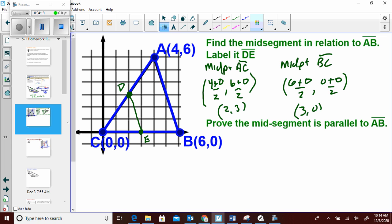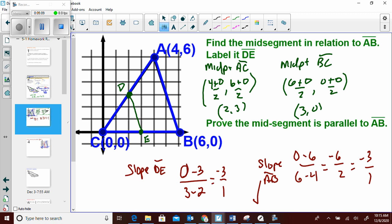How can I prove they're parallel? Well, exactly. We need the slopes. So let's find the slope of DE. Change in y over the change in x. 0 minus 3 over 3 minus 2. Negative 3 over 1. Now let's check the slope of AB. 0 minus 6. 6 minus 4. Negative 6 over 2. Negative 3 over 1. Are they the same slope? Yep. So therefore, they are parallel. So we have shown that they're parallel by finding the slopes. We found that triangle mid-segment by finding the midpoints.